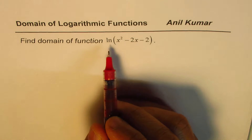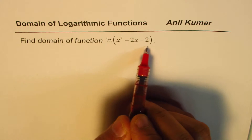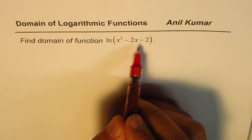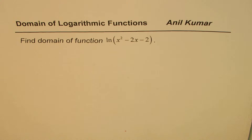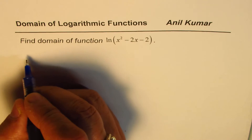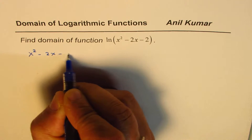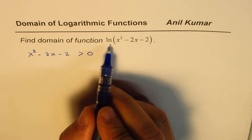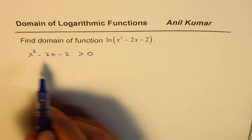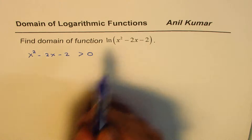As you know, this logarithmic function is defined for argument values greater than 0 — the argument should always be positive. So that gives us the restriction for the function. We need to find the domain, so we know that x² - 2x - 2 should always be greater than 0. Only then ln of this is defined, and that gives us the domain of this particular function.